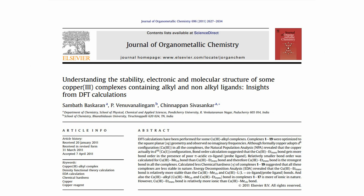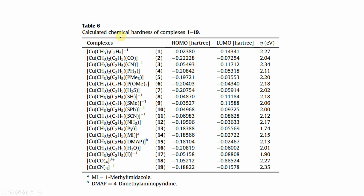This is my paper published in the Journal of Organometallic Chemistry, where I used this method to calculate the chemical hardness of the system. This is Table 1 showing calculated chemical hardness for 19 complexes. Here I'm going to show you how to calculate the chemical hardness of a copper complex. The calculated HOMO and LUMO energies and the resulting chemical hardness eta are shown. For example, the pyridinic complex has a value of 1.74, which is the lowest hardness value.